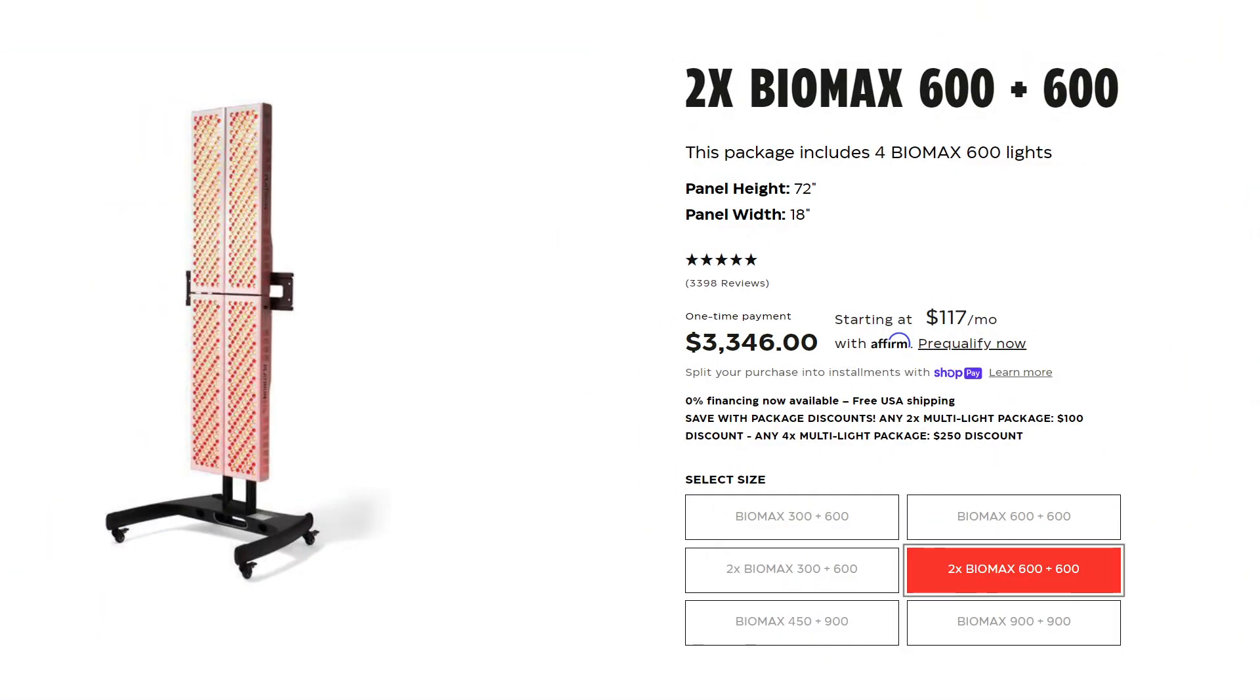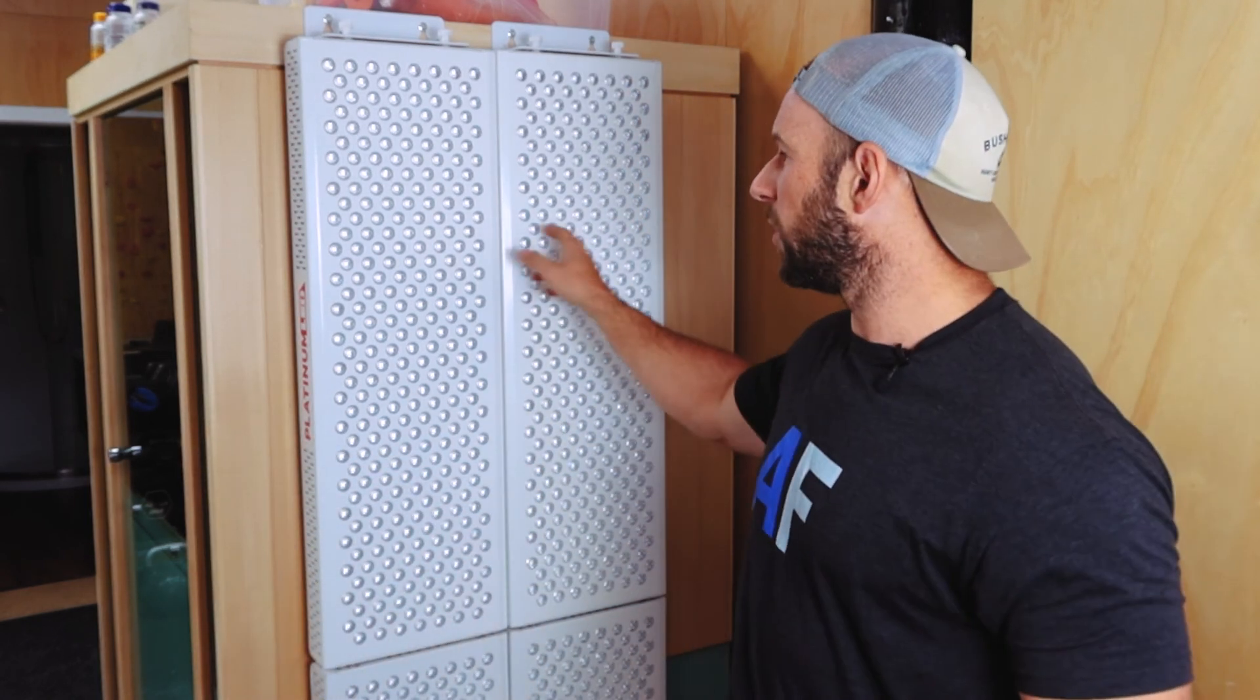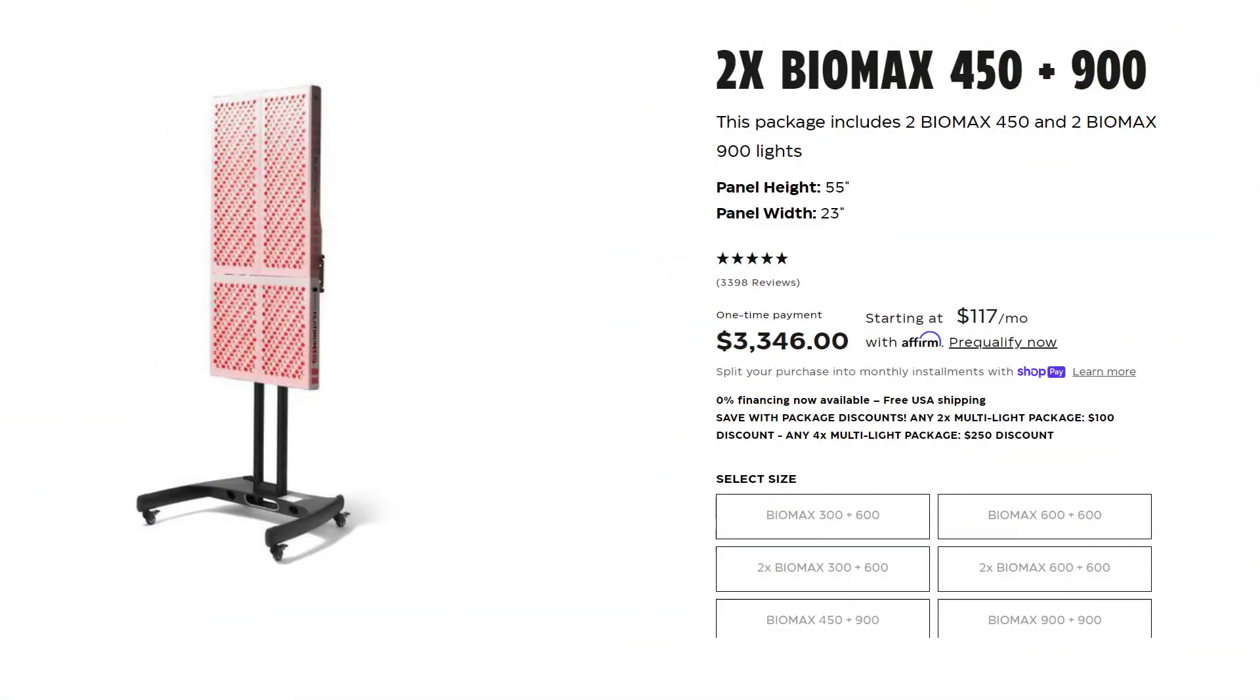$4,000 odd dollars is a lot of money. If you're looking for something a little bit cheaper within the Platinum LED product range, I would probably recommend looking at either four Biomax 600s, which is about $3,200. The downside there is you're getting a narrower setup. It's the same height, but a little bit narrower.